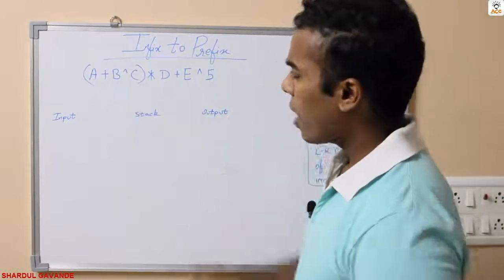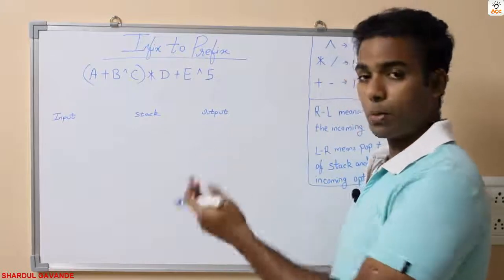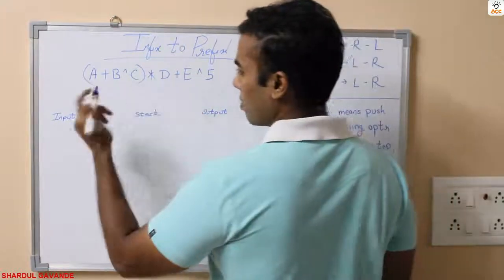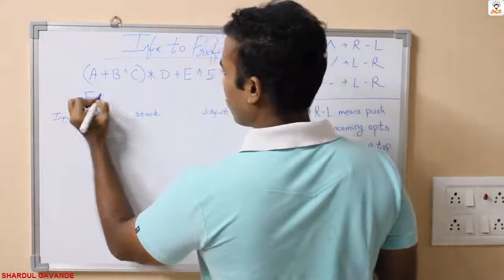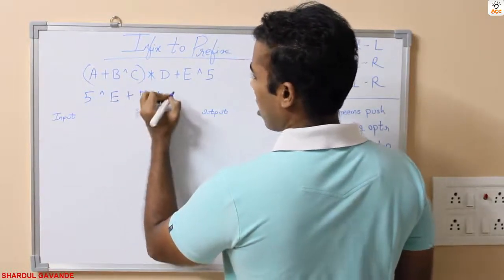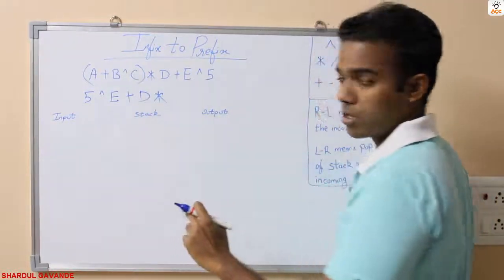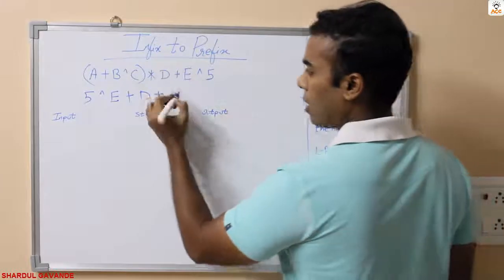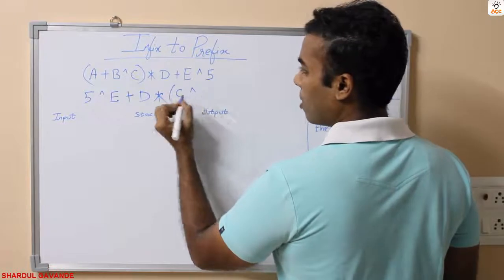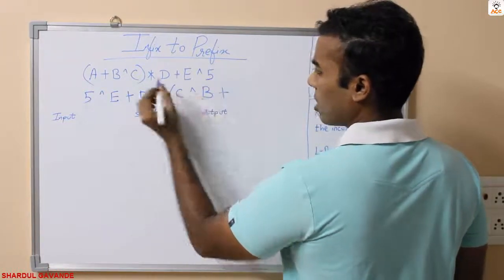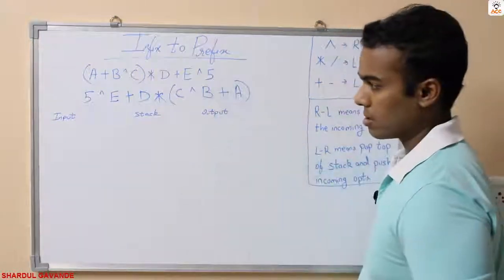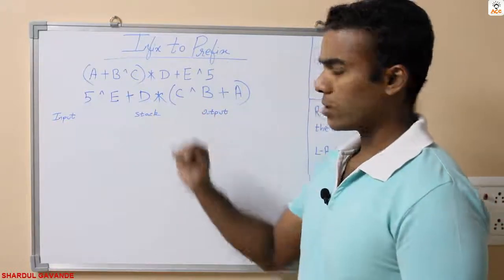Whenever you have an infix expression given and you have to convert it to prefix expression, first of all reverse your infix expression. So step one is: reverse your infix expression. I will write here 5, then power, then E, plus, then D, star. Now here I have close parenthesis, so whenever I come across close parenthesis I will write the opposite of it, which is open parenthesis. Then I will have C, then again power, B, plus A, and then I have open parenthesis, so I will write close parenthesis. Now I have this reverse expression of the infix expression.